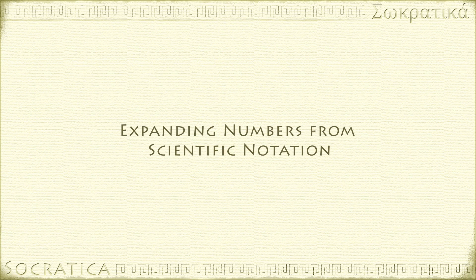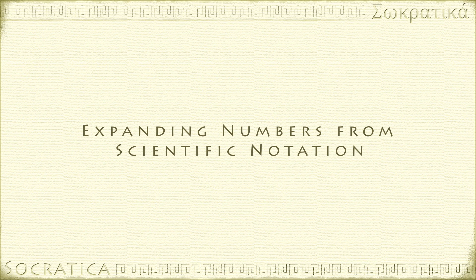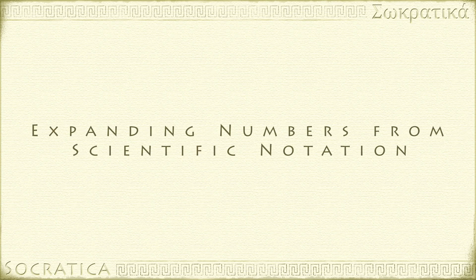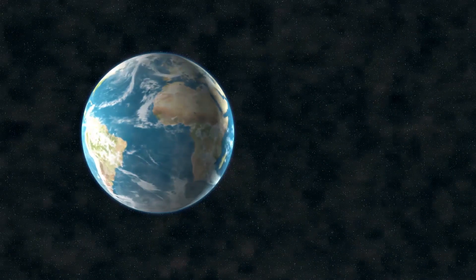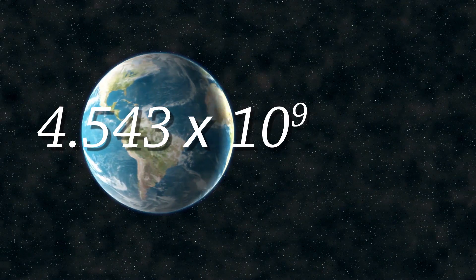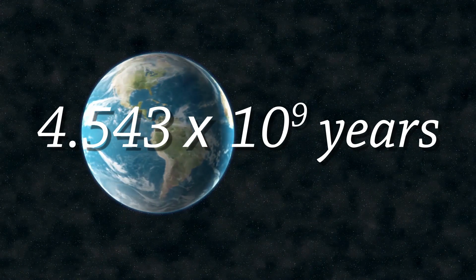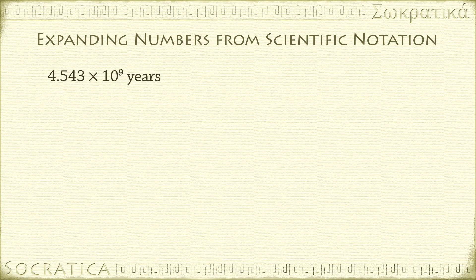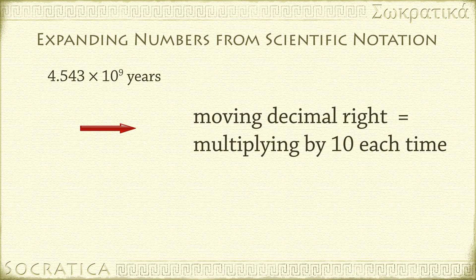How about if we want to go in the other direction? What if we started with a number in scientific notation and we want to expand it? For example, the approximate age of the Earth is 4.543 times 10 to the ninth years. To get rid of that 10 to the ninth, we need to move the decimal point to the right. Remember, moving the decimal point to the right is the same as multiplying by 10. So each time you move the decimal to the right, take away one of those 10s on the right.